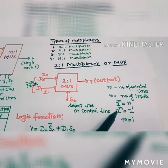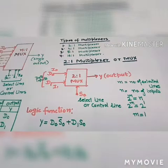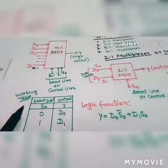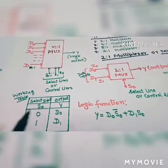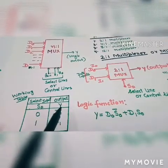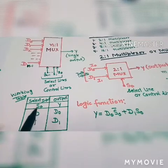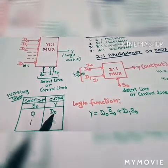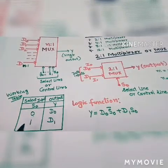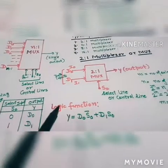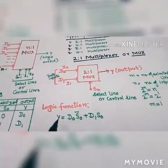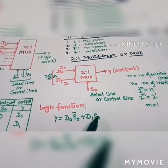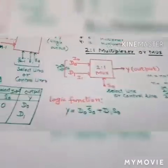Now let's do the working table. Select input S0 is 0: the output is D0. Select input S0 is 1: the output is D1. According to the logic function, the output Y equals D0 · S0' plus D1 · S0. This is the logic function.